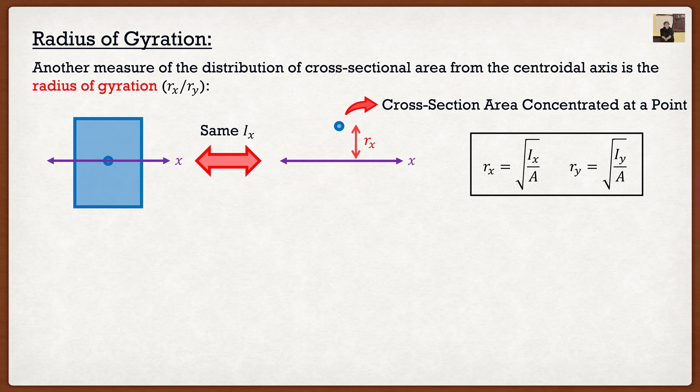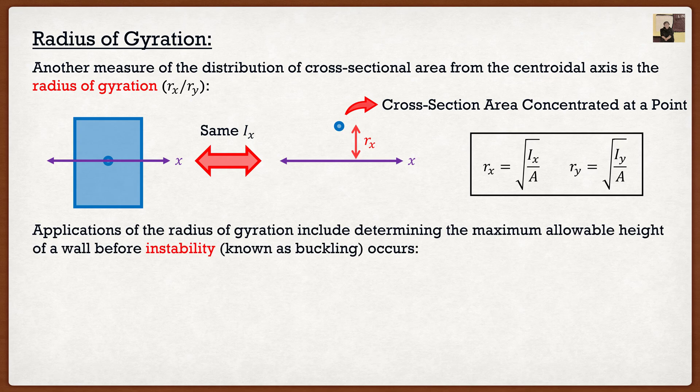Now you're saying, how do you use that in design? Radius of gyration actually makes our lives a lot simpler because what it's actually related to is instability problems known as buckling.